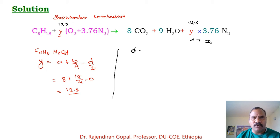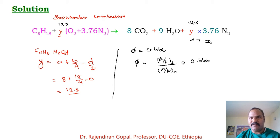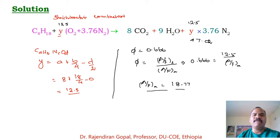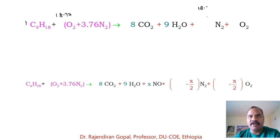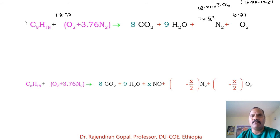The equivalence ratio is defined as the stoichiometric air-fuel ratio over the actual air-fuel ratio. So 0.6 = 12.5 / actual air-fuel ratio, giving an actual air-fuel ratio of 18.77 kilomoles. Because this amount of air is in excess, O2 will remain in the products. The actual combustion gives: C8H18 + 18.77(O2 + 3.76 N2) → 8 CO2 + 9 H2O + 70.57 N2 + 6.27 O2.